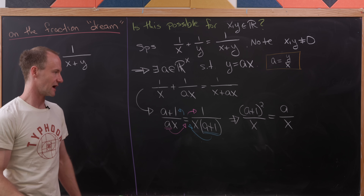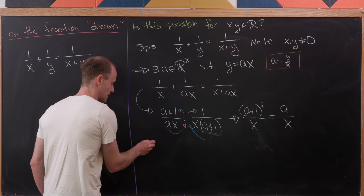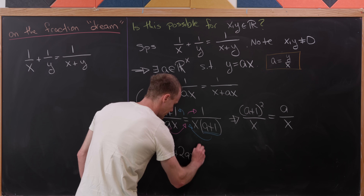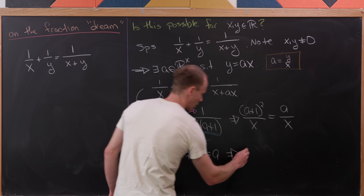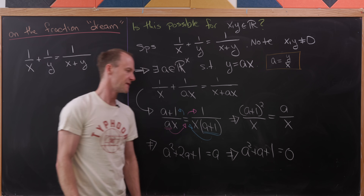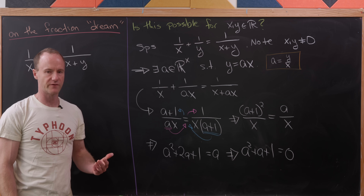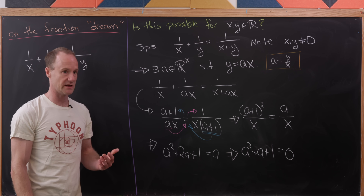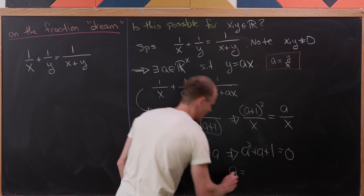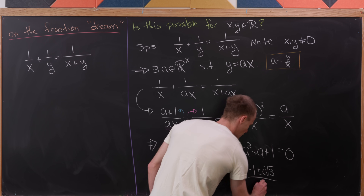We've still got x in the denominator on both sides, so we can simply set (a+1)² = a. Expanding, we have a² + 2a + 1 = a, or a² + a + 1 = 0. Using the quadratic formula, we get a = (-1 ± i√3) / 2.